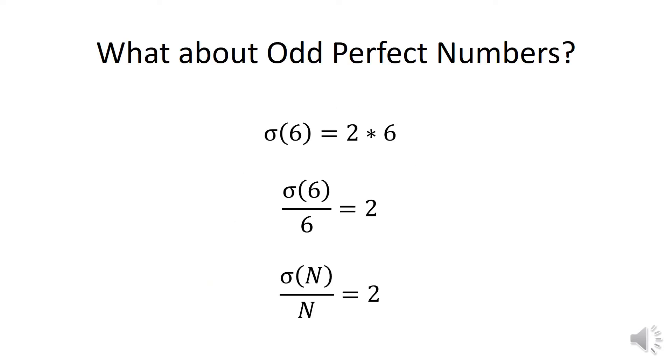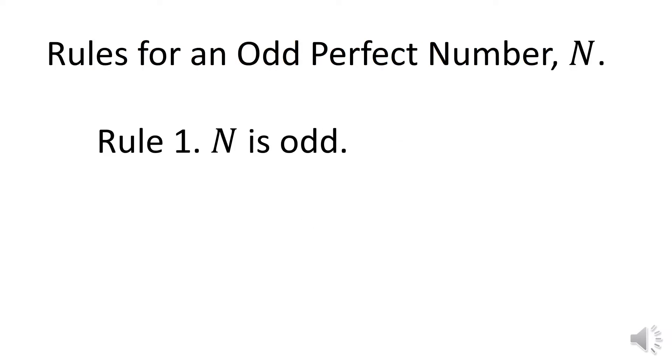Take the sum of divisors of a number like six and call this the sum, the function named by the lowercase Greek letter sigma. Then sigma of six is two times six. Sigma of six divided by six is two. For an odd perfect number N, sigma of N divided by N is two.